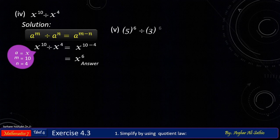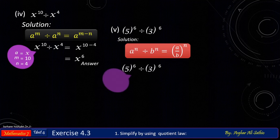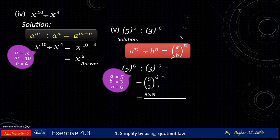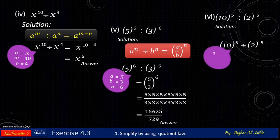In problem number five, we have the same power value but the bases are different, so we will use the second condition of the quotient law. Put the values of the given problem into the formula and then simplify it. Similarly, you may solve all other problems of this exercise by yourself. Please don't forget to like this video. If this video helped you understand this exercise, please subscribe to my YouTube channel and I will make more videos like this for you.